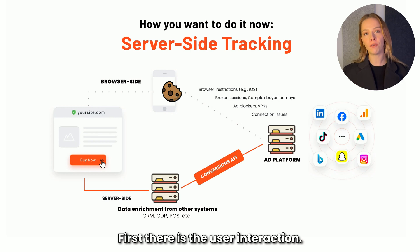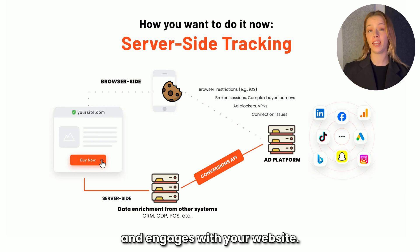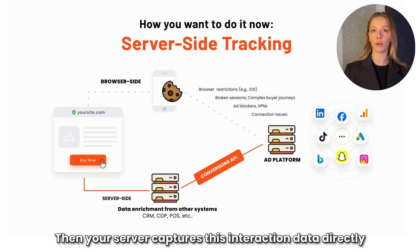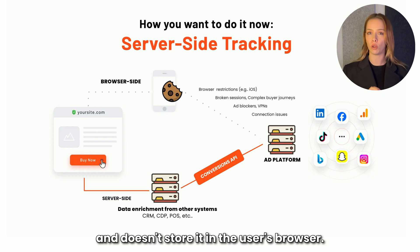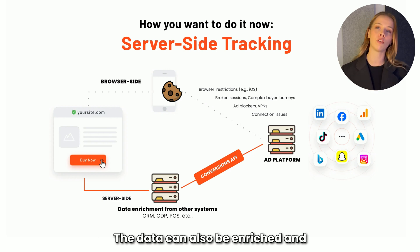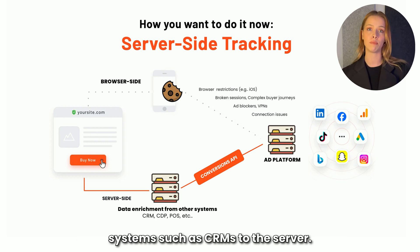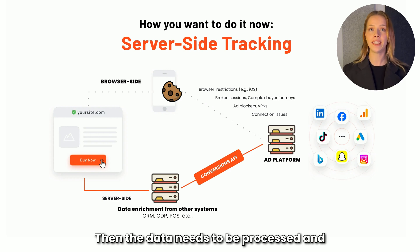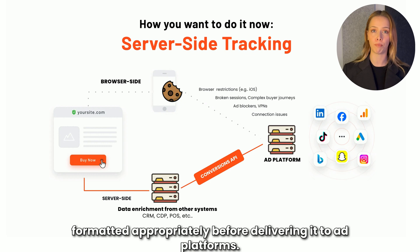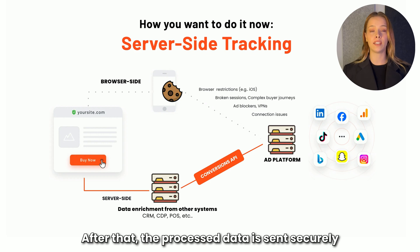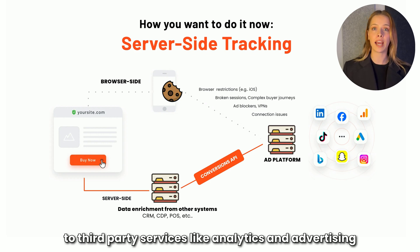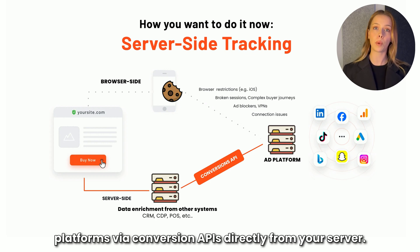First, there is the user interaction: somebody clicks on your ad and engages with your website. Then your server captures this interaction data directly and doesn't store it in the user's browser. The data can also be enriched and offline conversions can be delivered from other systems, such as CRMs, to the server. The data needs to be processed and formatted appropriately before delivering it to ad platforms. After that, the processed data is sent securely to third-party services like analytics and advertising platforms via conversion APIs directly from your server.